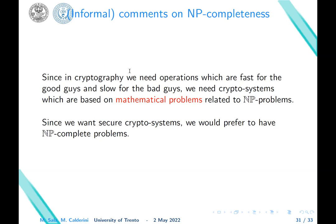Therefore, in cryptography, we need operations which are fast for the good guys and slow for the bad guys. This means problems that we can work with polynomially, but to find a solution has to cost exponentially. In other words, we need cryptosystems which are based on mathematical problems related to NP problems. Since we want security for the system, we would prefer to have NP-complete. That would be the ideal.